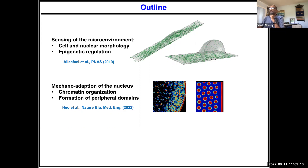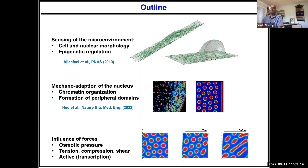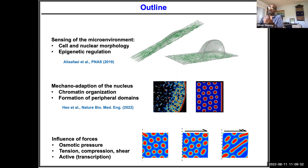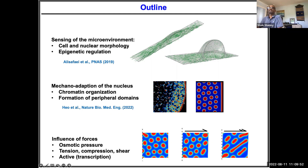As cells migrate, they see mechanical forces — tensile, compressive, or shear. Similarly, the cancerous microenvironment has a different pH, so osmotic pressure can play an important role in regulating the volume of the nucleus and hence chromatin organization. Active forces responsible for transcription can also change this organization. My focus today is on the first two parts; the second part is mostly unpublished.